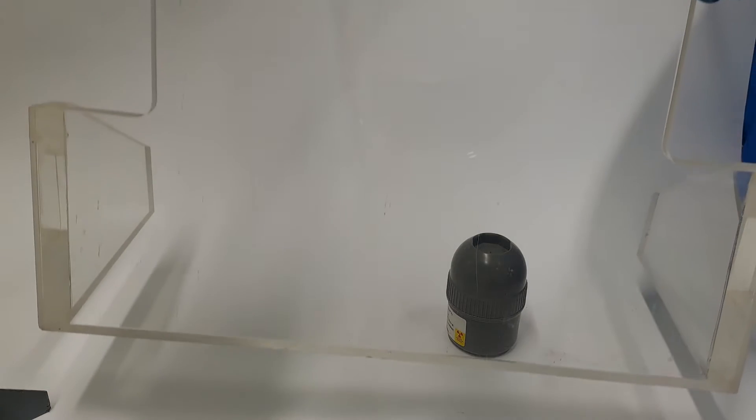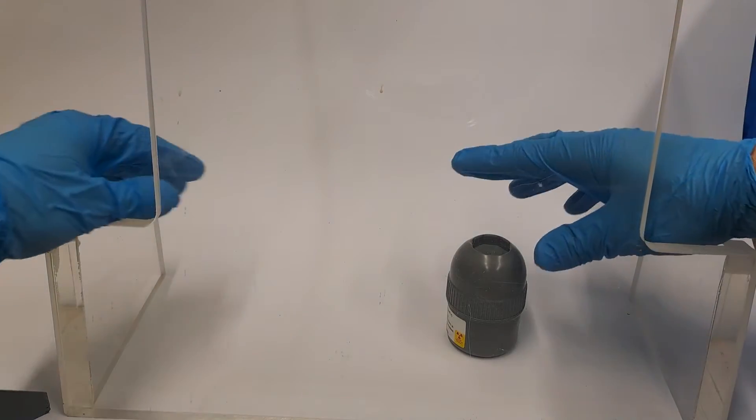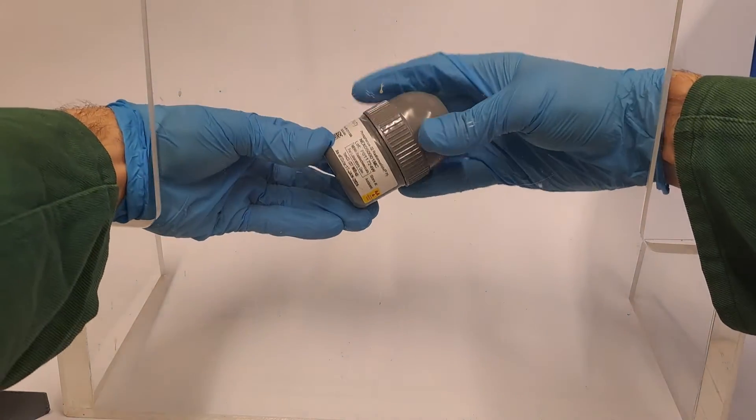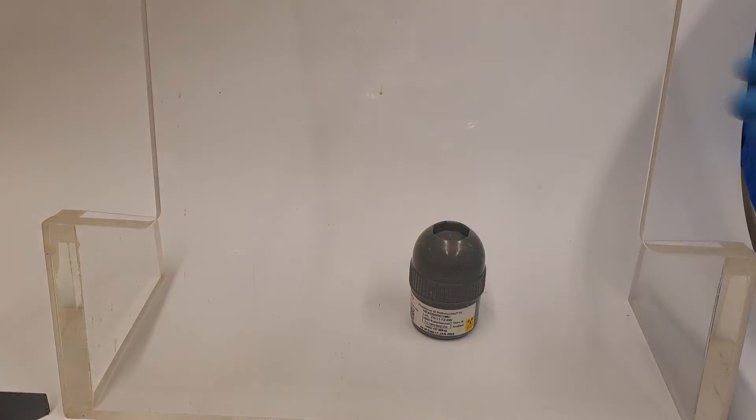However, because Phosphorus 32 is such a high energy beta emitter, it's good lab practice to set up a plastic barrier to shield without obscuring vision and it still allows you to work with it.